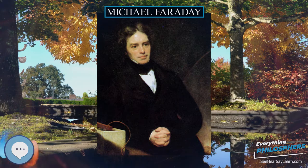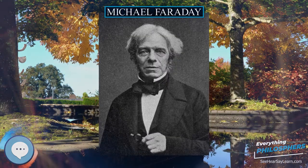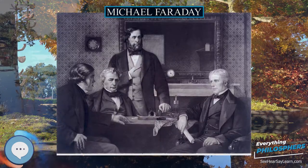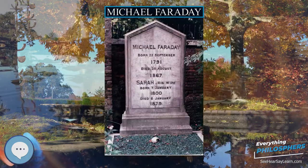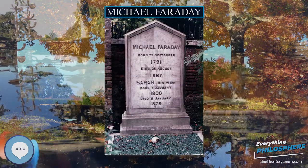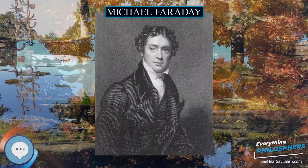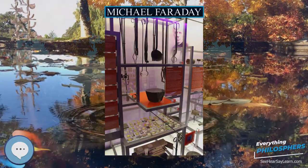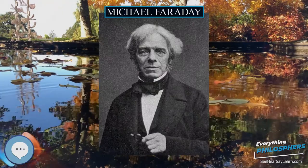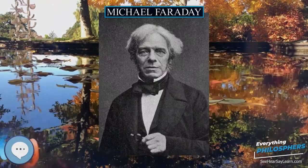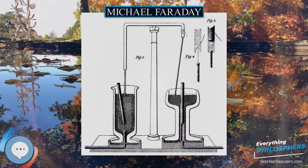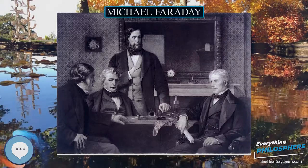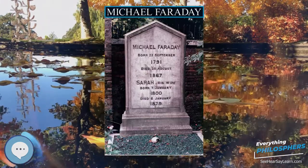Faraday had a long association with the Royal Institution of Great Britain. He was appointed assistant superintendent of the House of the Royal Institution in 1821, elected a member of the Royal Society in 1824, and in 1825 became director of the laboratory. In 1833, Faraday became the first Fullerian Professor of Chemistry at the Royal Institution of Great Britain, a position to which he was appointed for life without the obligation to deliver lectures. His sponsor and mentor was John 'Mad Jack' Fuller, who created the position at the Royal Institution for Faraday.